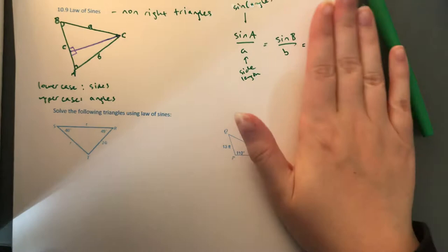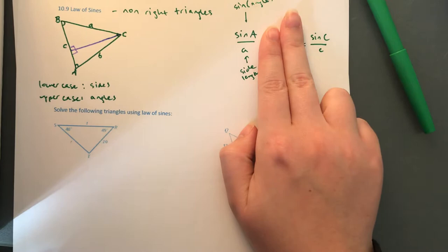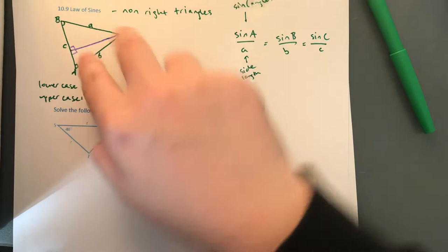The way it works is we typically just take two of these proportions at a time. If we know some stuff about A and B but we're missing one thing, we'll use the A and B part — or we could do B and C, or A and C. We're only ever going to set equal to one thing at a time, but you can set up any pair proportionally.